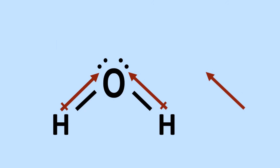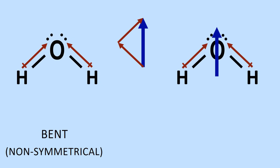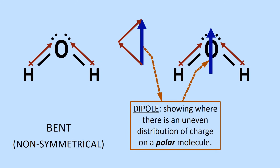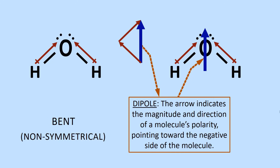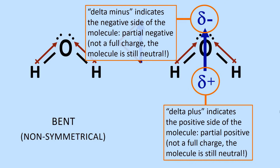If we view the bond polarities as vectors and add them together, the resulting vector, or arrow, indicates the polarity of the molecule. The blue arrow is called a dipole, showing the uneven distribution of charge on a polar molecule. The arrow indicates the magnitude and direction of the polarity, pointing toward the negative side of the molecule. The symbol delta-minus indicates the negative side, and delta-plus indicates the positive side. Note these are partial charges, not the full charge that an ion would have.